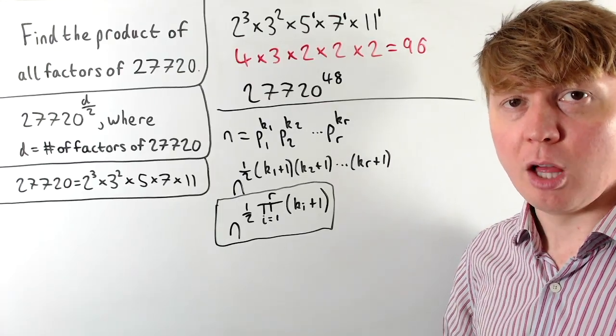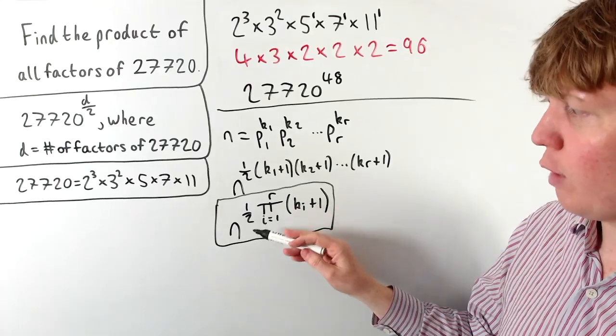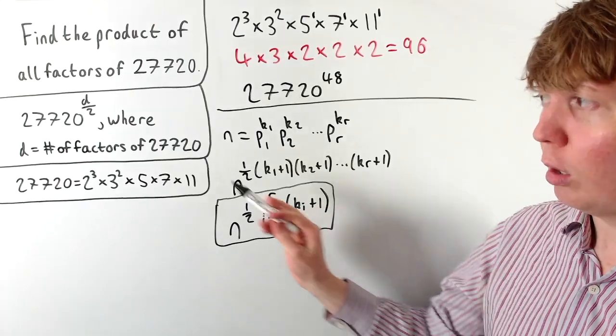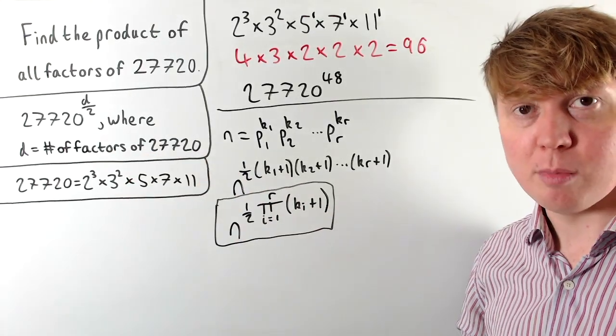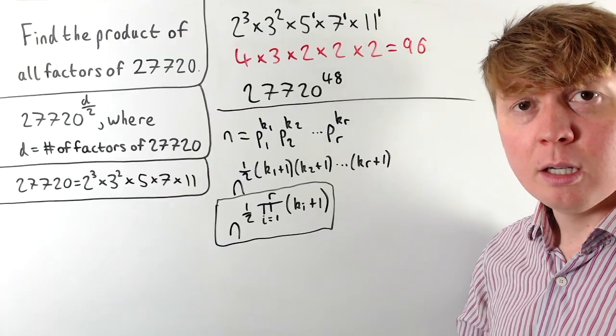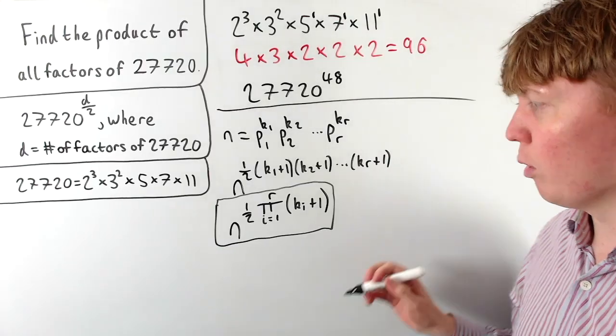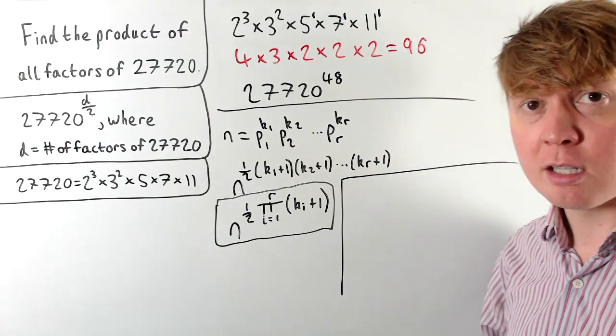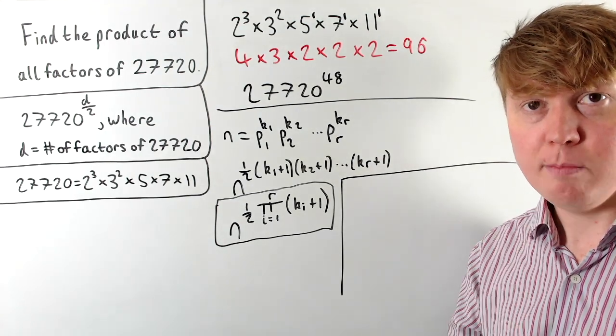And if we look at this formula, I think this looks a little bit weird that we have this factor of a half, because it is possible for our number of factors of a number to actually be an odd number. So in this case, if we have an odd number of factors, it turns out this actually corresponds to the case exactly where we have a square number.